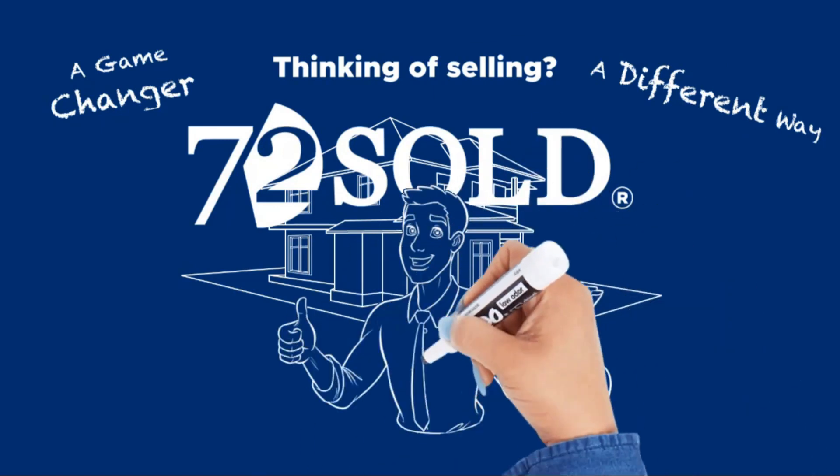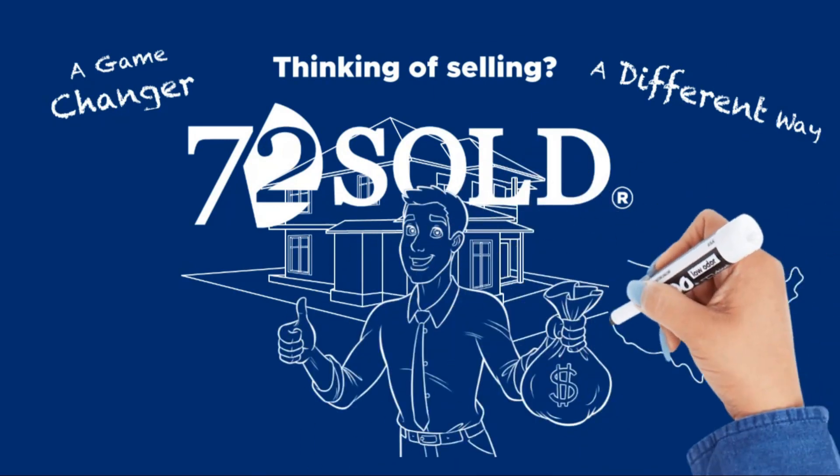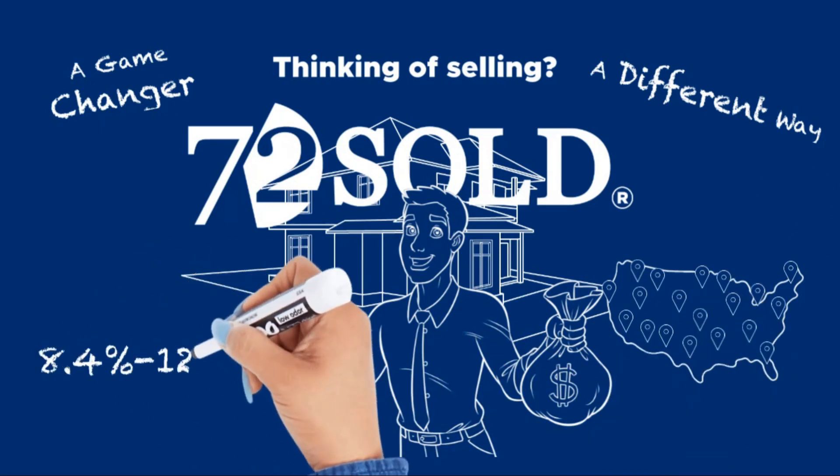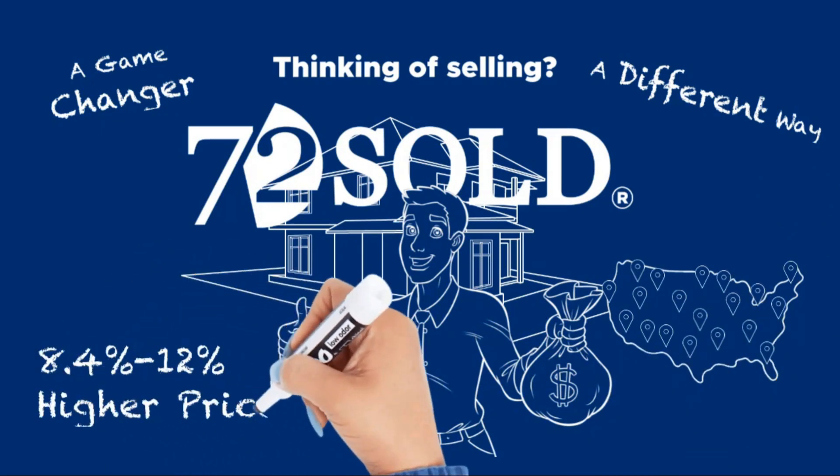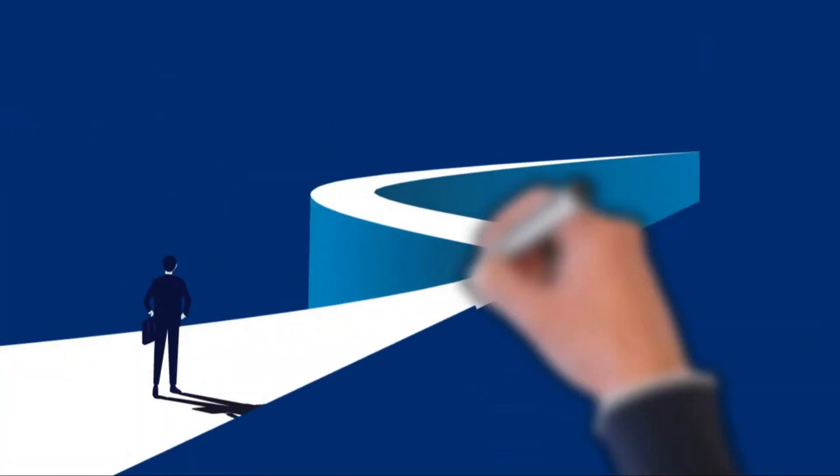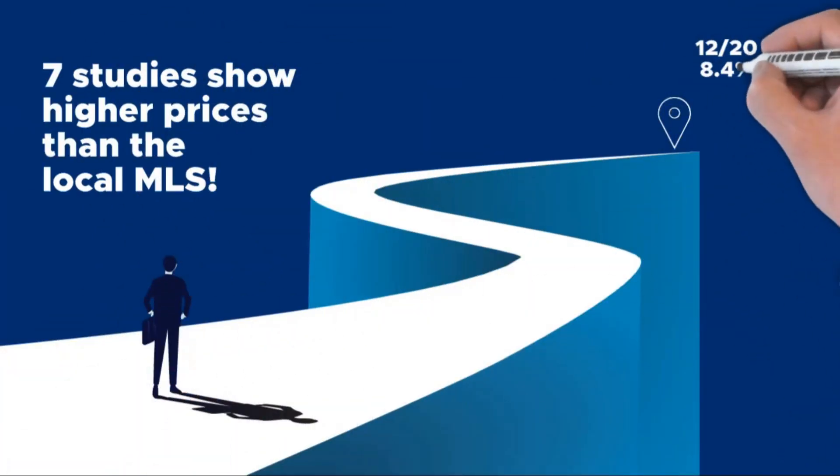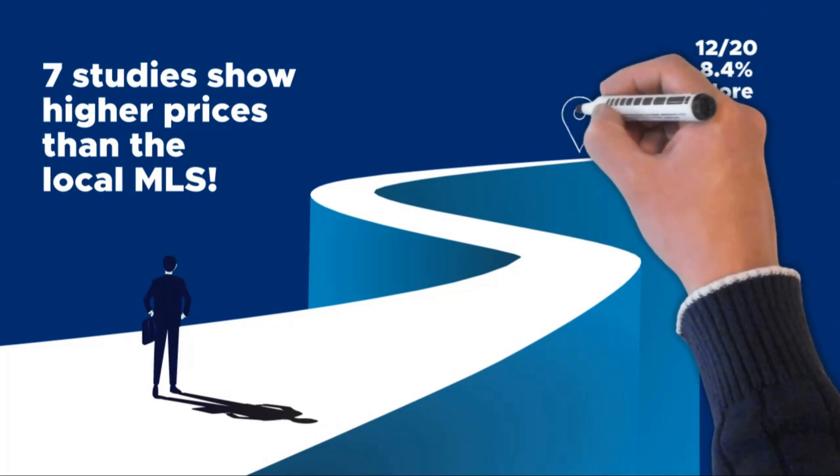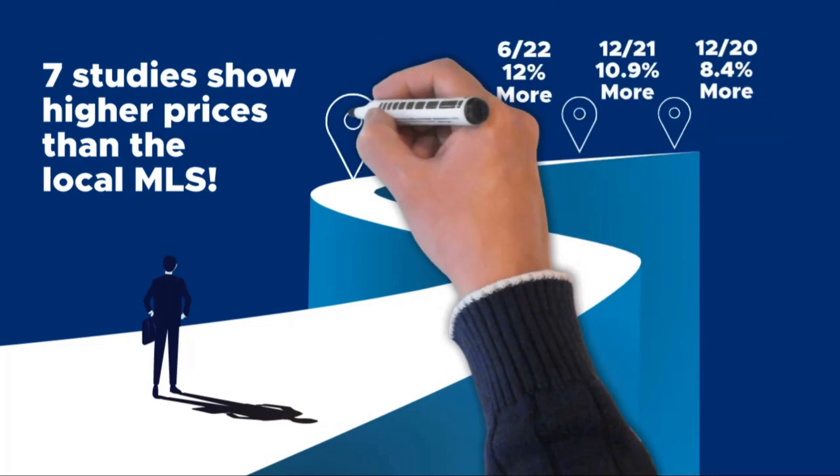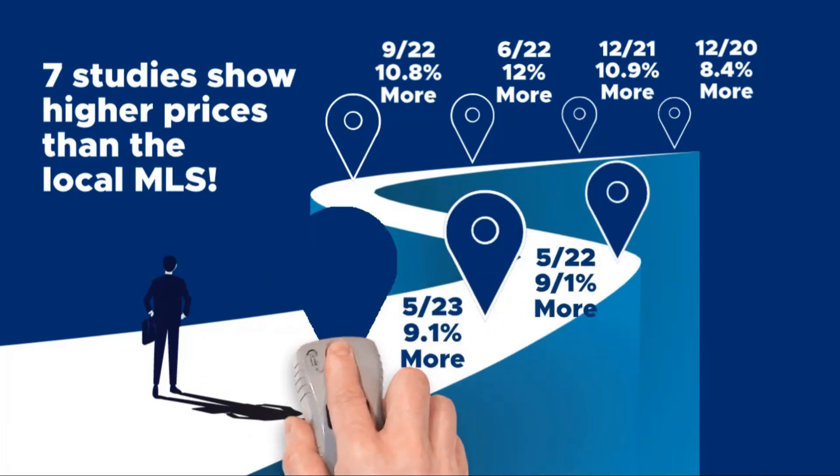A program that has already enabled thousands of home sellers in multiple cities to average 8.4 to 12% higher sale prices than other homes sold in their areas. Seven independent studies over the past four years proved time after time that home sellers who used the 72Sold program walked away with thousands more than other homes in their area that were sold the traditional way.